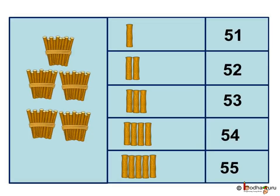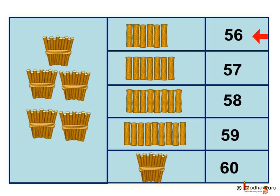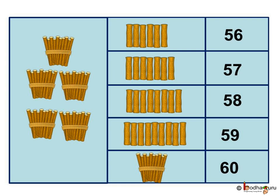Counting forward now. 5-8: 58, 5-9: 59, 6-0: 60, which is 6 tens.